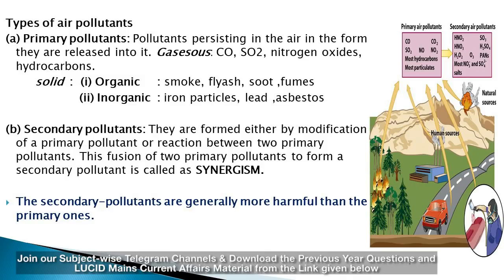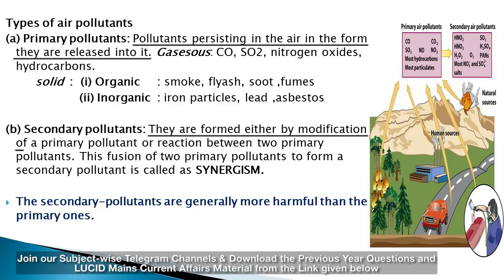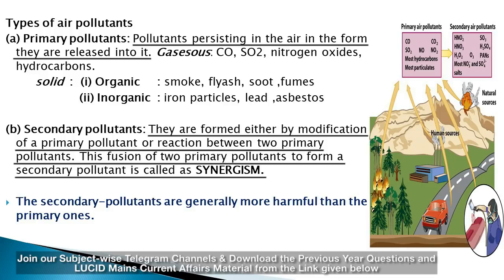Types of air pollutants: primary pollutants persist in the air in the form they are released. Gaseous primary pollutants include CO, SO₂, nitrogen oxides, and hydrocarbons. Solid primary pollutants are either organic (smoke, fly ash, soot, fumes) or inorganic (iron particles, lead, asbestos). Secondary pollutants are formed by modification of or reaction between two primary pollutants; this fusion is called synergism. Notably, secondary pollutants are generally more harmful than primary ones.